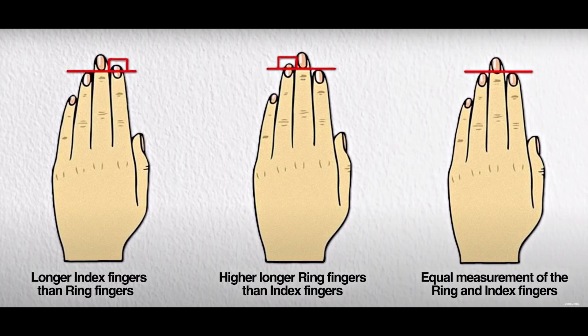Individuals with longer ring fingers compared to index fingers often exhibit logical thinking and excel in problem-solving, gravitating towards scientific or engineering careers. Conversely, those with longer index fingers may lean towards solitary, goal-oriented pursuits and exhibit introversion, though this is subject to debate. Individuals with equal ring and index finger lengths often display diplomatic traits and conflict-avoidance skills, yet may possess intense personalities despite a calm exterior.